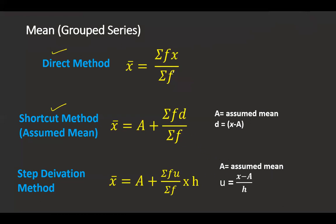For the direct method, the base formula is sigma fx divided by sigma f. Now, just note down this base formula. I am going to tell you how to remember the other two formulas.